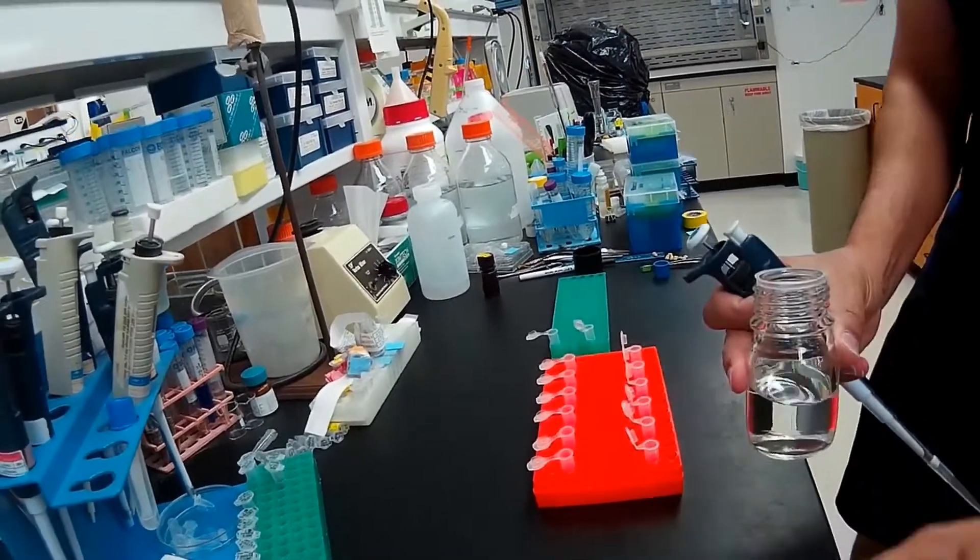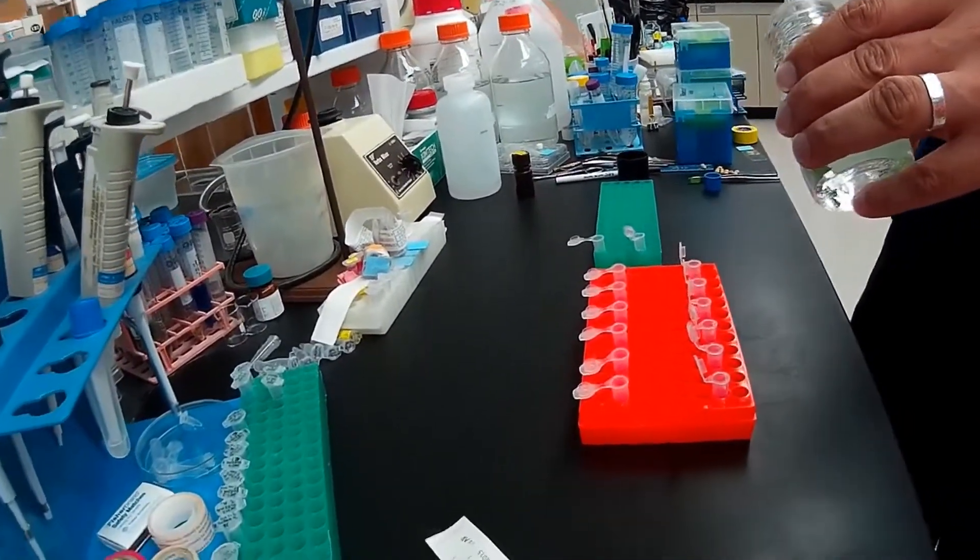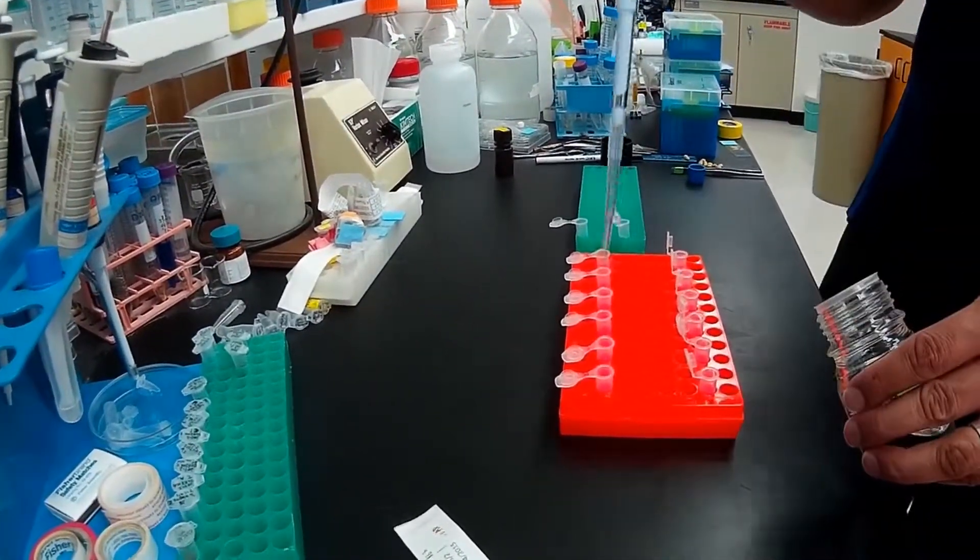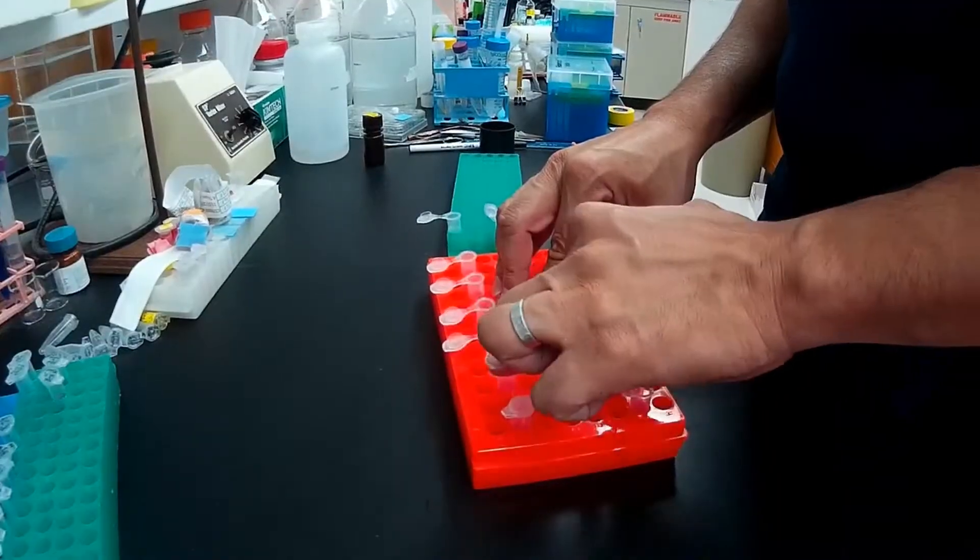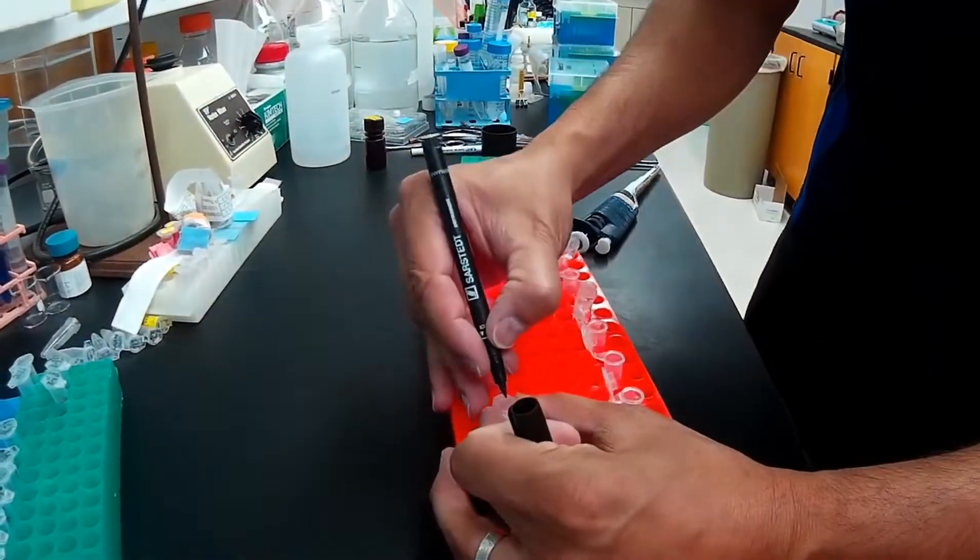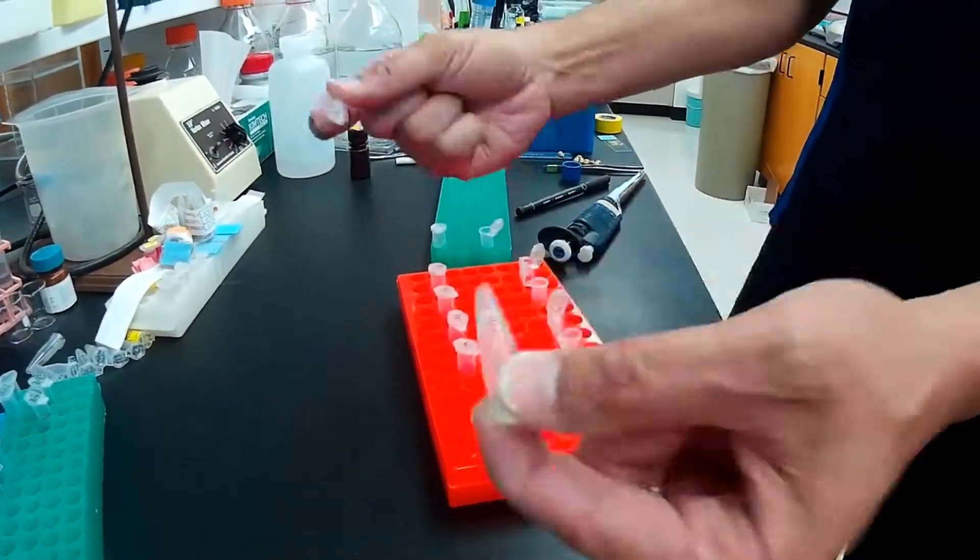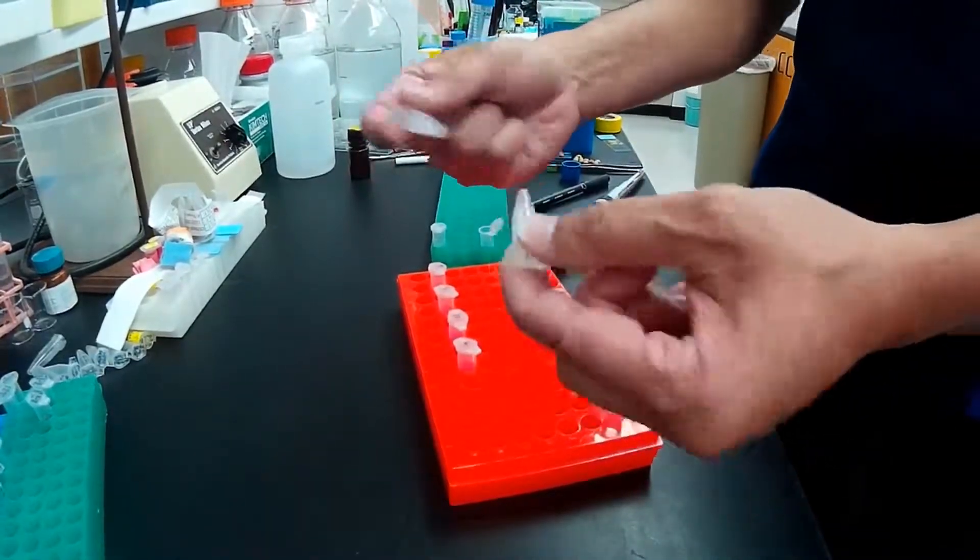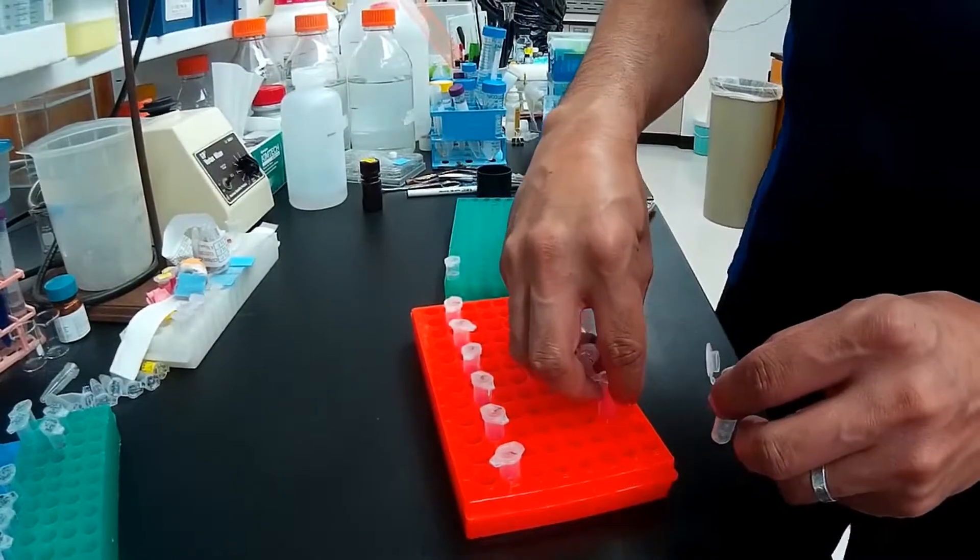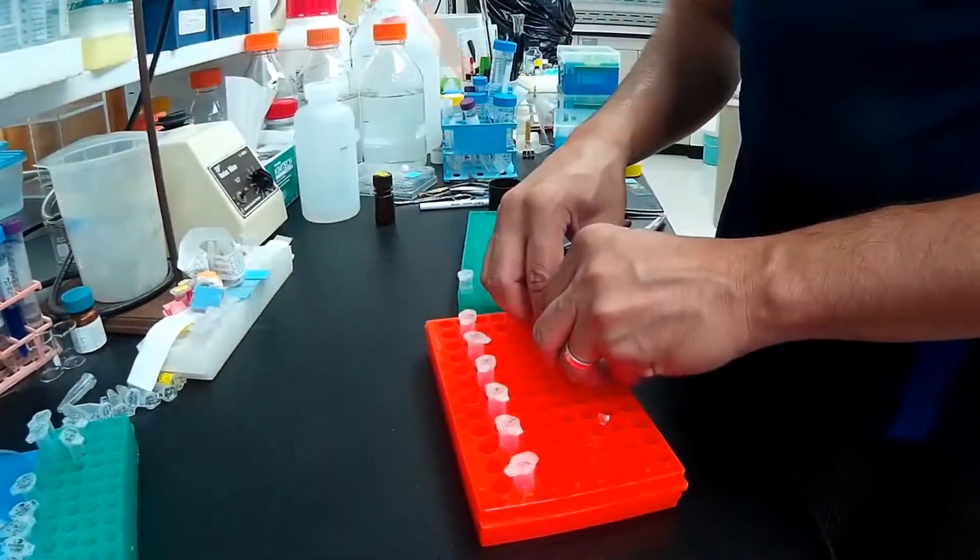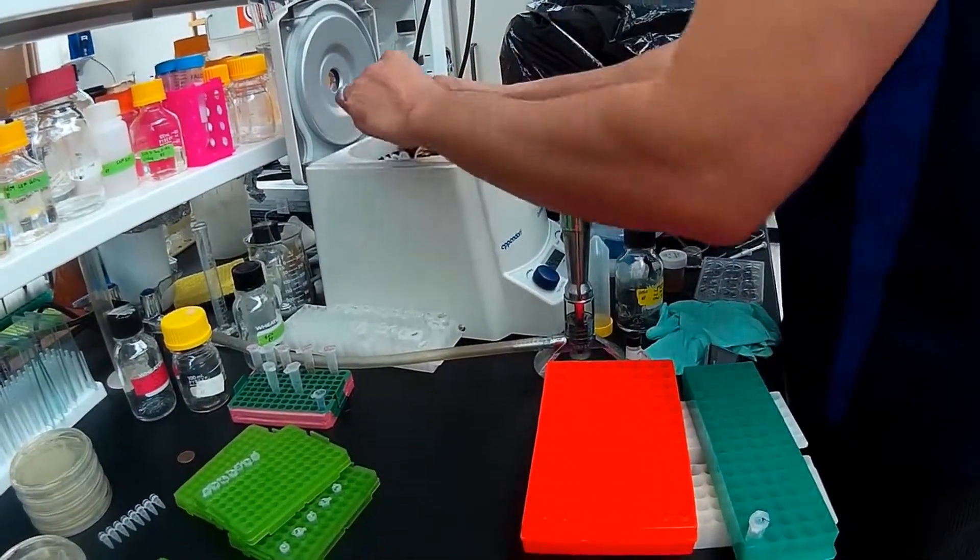Next we'll add isopropanol, 225 microliters. This will precipitate the plasmid DNA. Mix the tubes well by either vortexing or shaking, and discard precipitated pellets. Spin at maximum speed for five minutes.